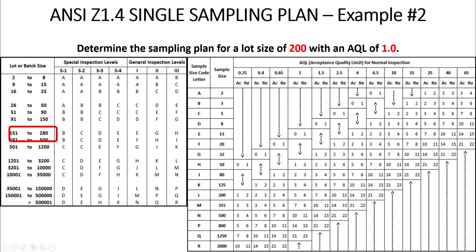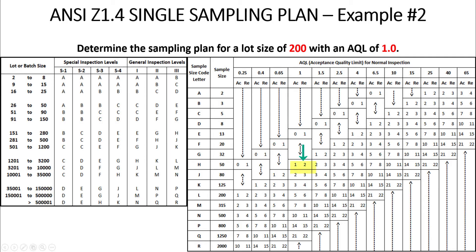Sample size code letter G corresponds to 32 pieces. When we pair code letter G with AQL 1.0, we find a downward arrow. A downward arrow means we move down to the next sample size plan, which is sample size code letter H — a sample size of 50 with accept/reject criteria of 1 and 2. So from the 200-piece lot, we sample 50, accepting with one or fewer defects and rejecting with two or more.